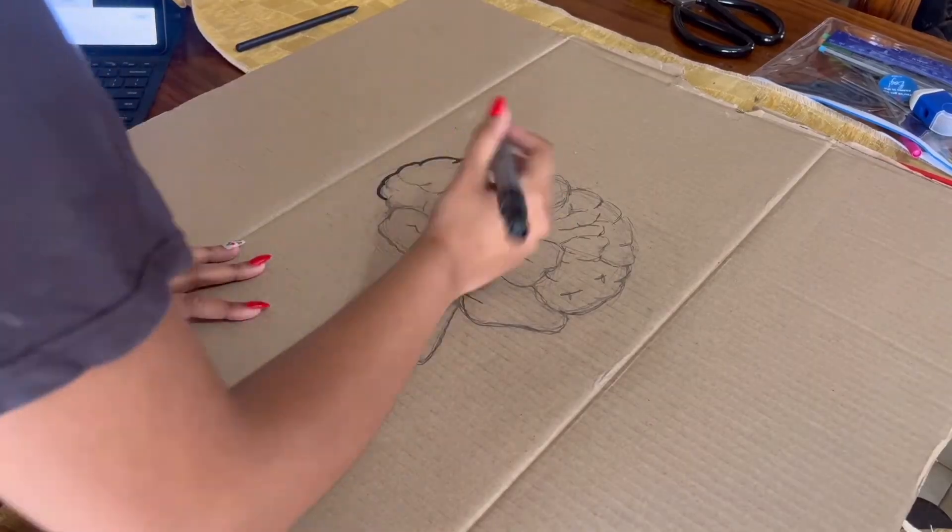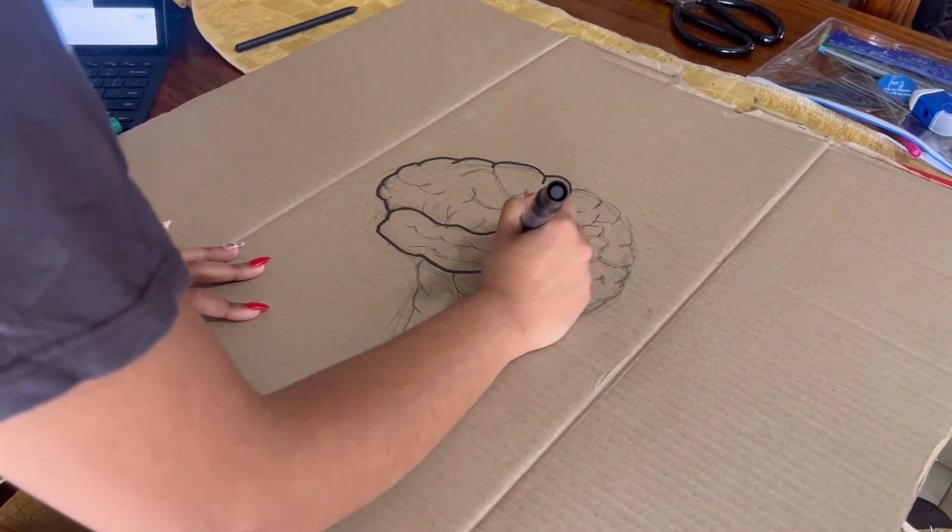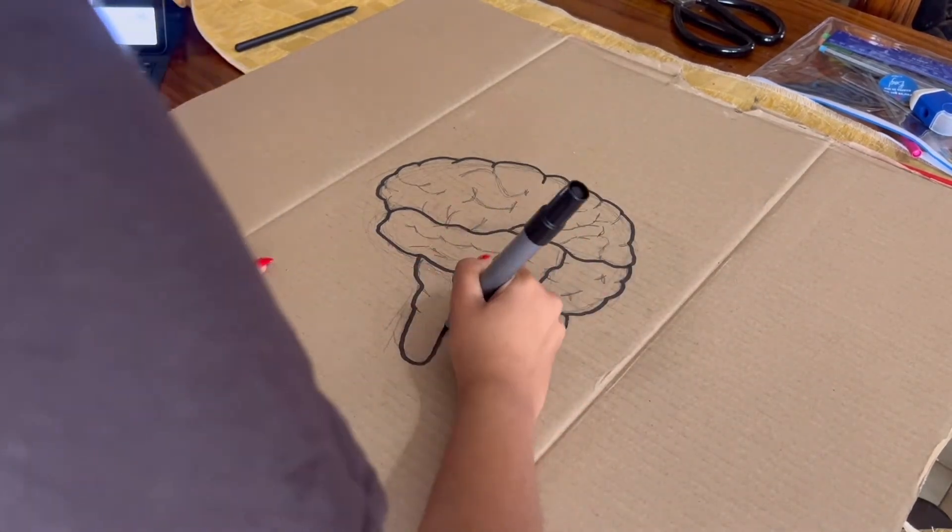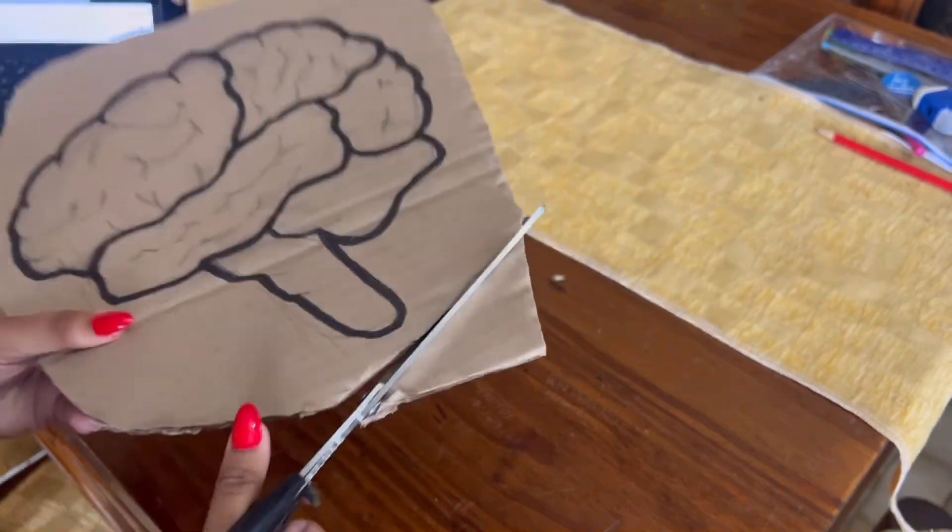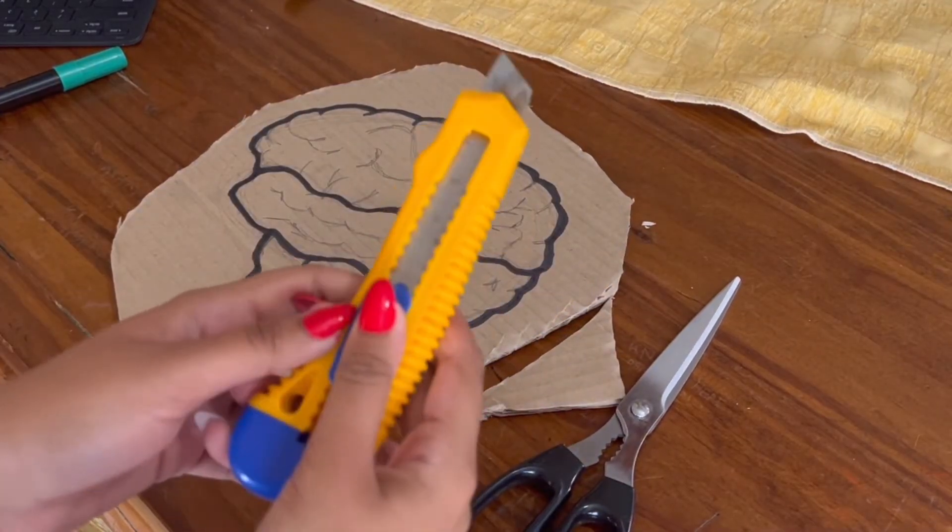Once I finished the sketch, I then outlined the drawing with a black marker. I then used scissors to cut the brain out and then used box cutters to cut the parts of the brain to create a puzzle.